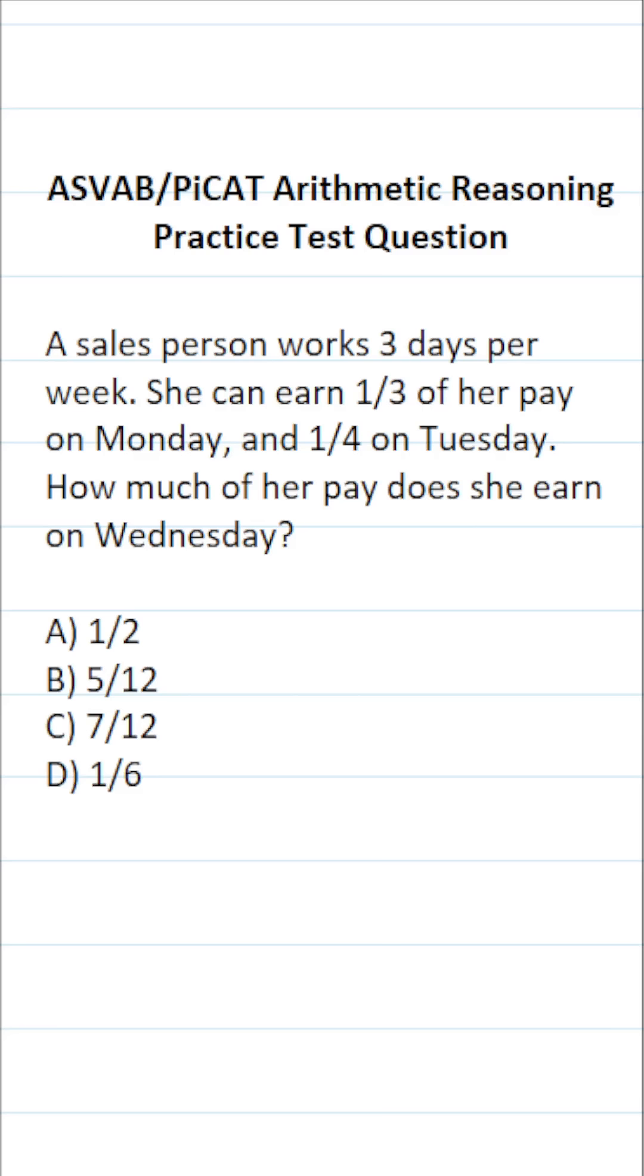So let's translate these statements into an equation that we can then solve. We know she earns one-third of her pay on Monday, one-fourth of her pay on Tuesday, and we want to know how much of her pay she earns on Wednesday. That's unknown, so let's call that X. And when we add this all up, this is going to equal one. This one represents her total pay. So all we have to do is solve this equation for X.